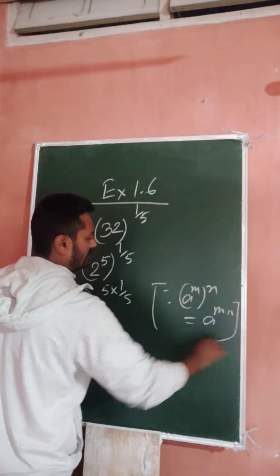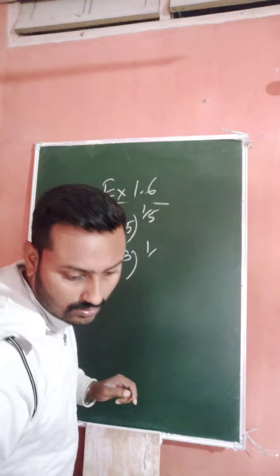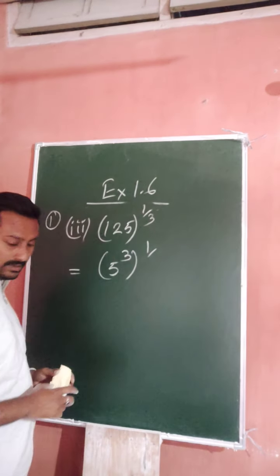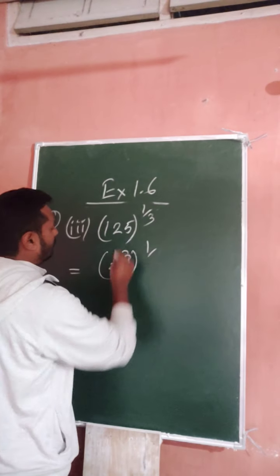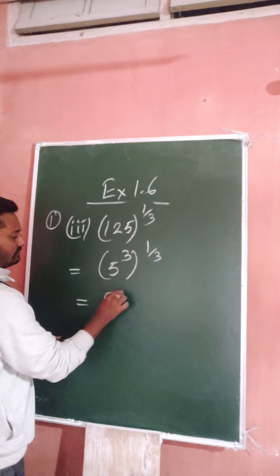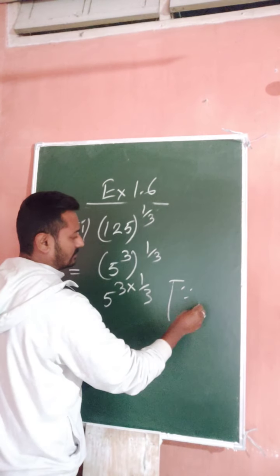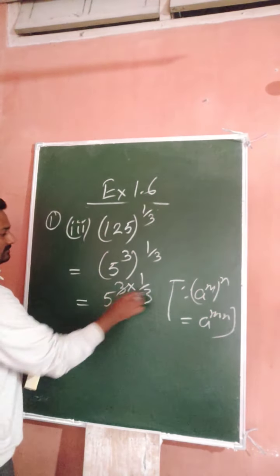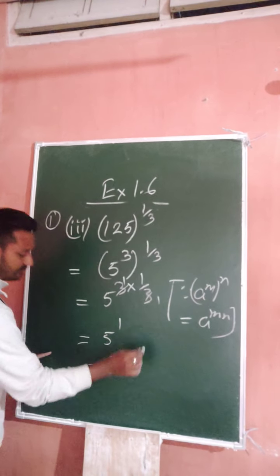Next one: 125 whole to the power one by three. So 125 is actually 125 whole to the power 1 by 3. That's 5 cubed. So using a to the power m whole to the power n equals a to the power m times n, we get 5 to the power 3 times 1 by 3, which equals 5 to the power 1, that means 5.